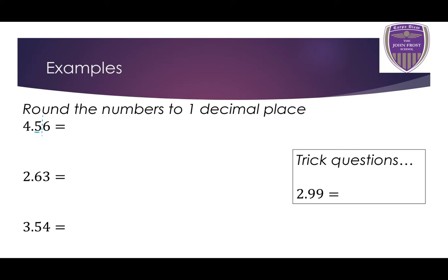If it's less than 5, I keep it the same. In this case, with 4.56, the number after the first decimal place is 6 — that's 5 or bigger. So the 5 turns into a 6. Therefore, 4.56 to one decimal place is 4.6.